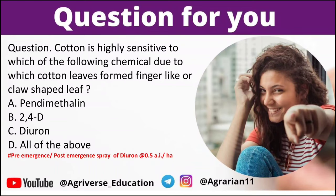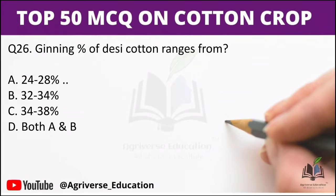The first question: cotton is highly sensitive to which chemical, due to which cotton leaves form finger-like or claw-shaped leaves? Options are: A) pendimethalin, B) 2,4-D, C) diuron, D) all of the above. The right answer is option C, diuron. Fact: pre-emergence and post-emergence spray of diuron is mostly used in cotton crop, and the rate of application is 0.5 ai per hectare.